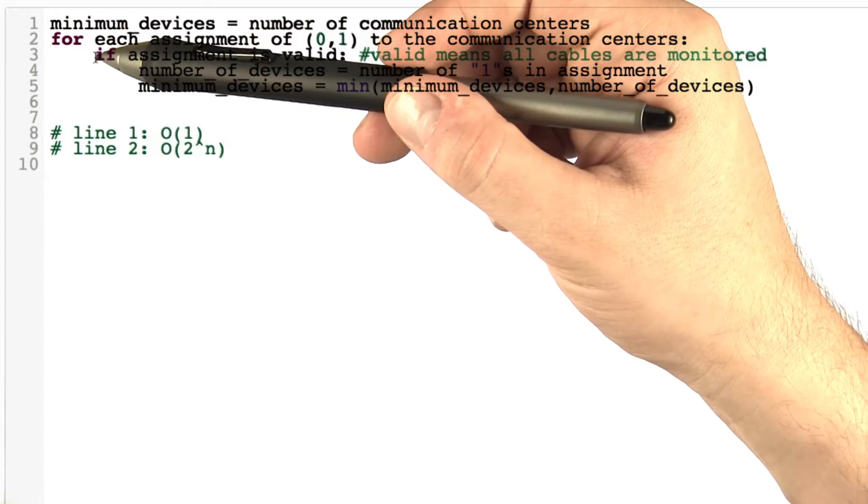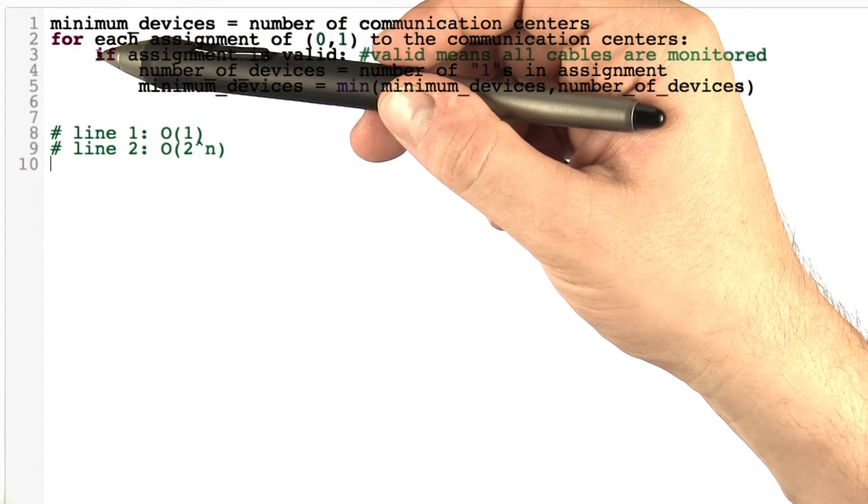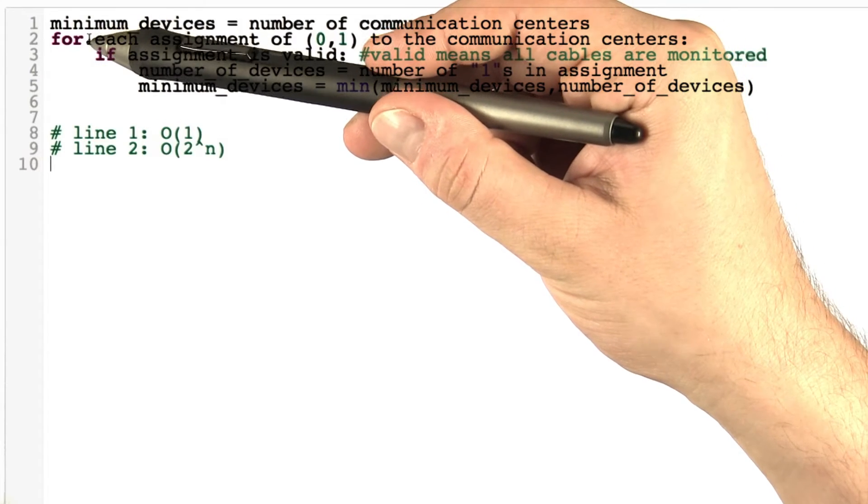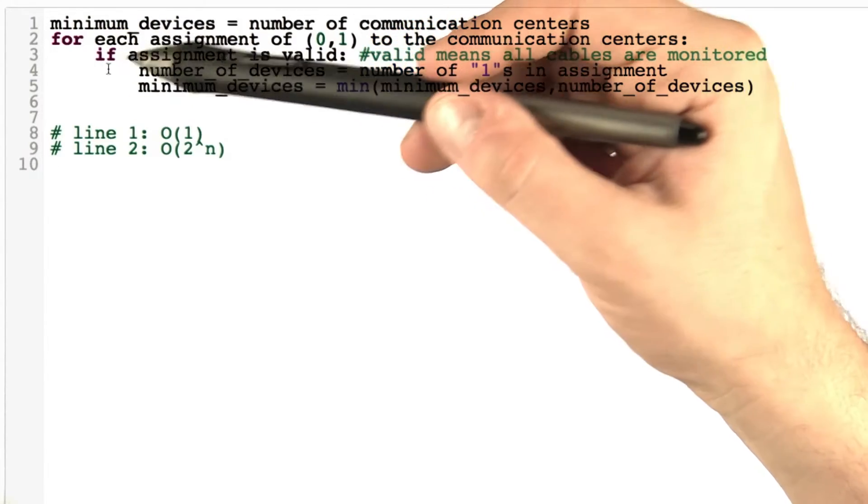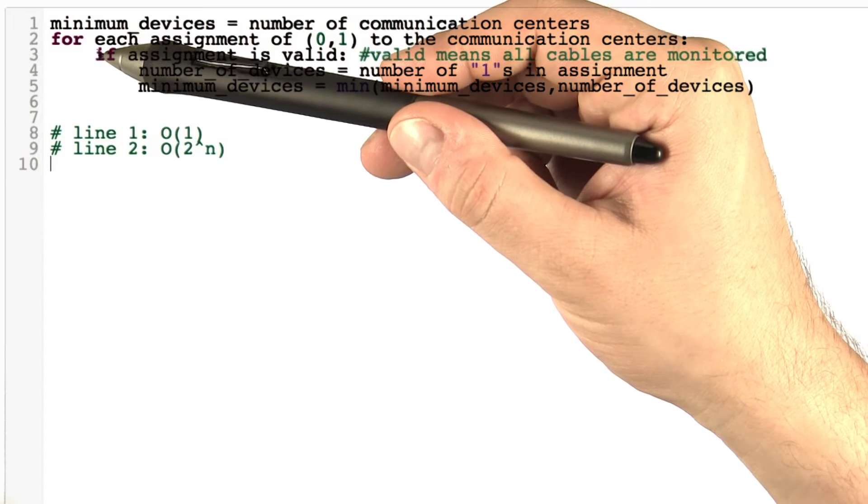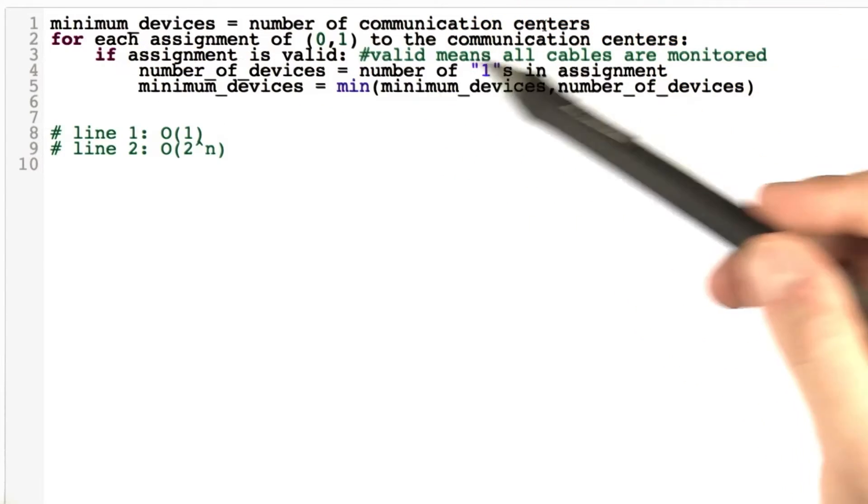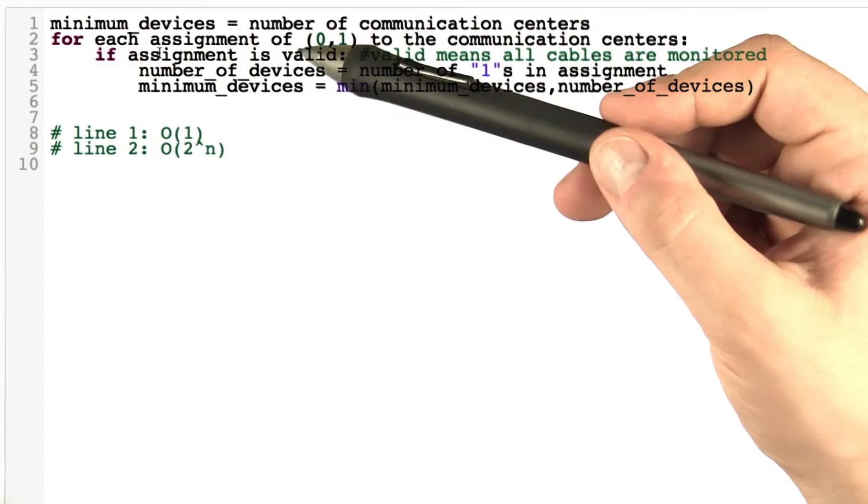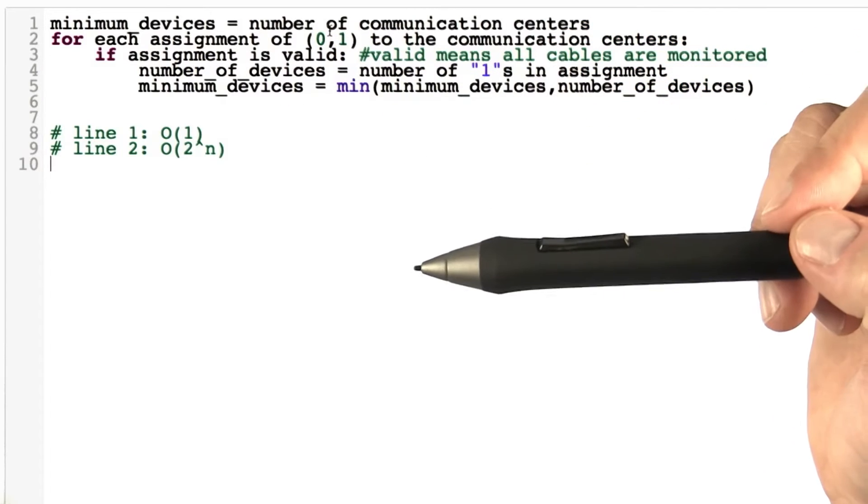So what about line number 3? So line number 3 is going to be called each time that this loop here executes. So each time the loop of lines 2, 3, 4, and 5 executes, we're going to call this function here. Now the question is how long does it take us to check if an assignment of 0 and 1 values is valid?